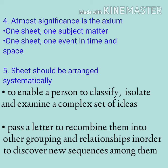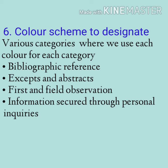Fifth, the sheets should be arranged systematically to enable a person to classify, isolate, and examine a complex set of ideas and their component parts, and later to recombine them into other groupings and relationships in order to discover new co-extensions and sequences among them. Sixth, it is advantageous to use a color scheme to designate categories such as bibliographic references, excerpts and abstracts, field observations, information from secondary persons, and inquiries. Using each color for each category makes it easier to differentiate various cards while writing a thesis.